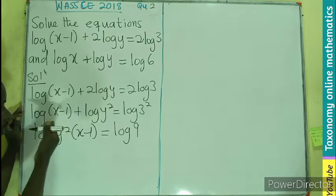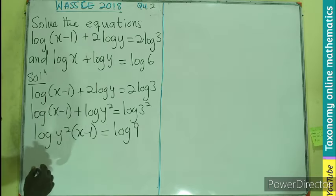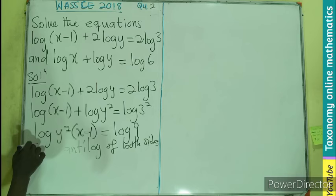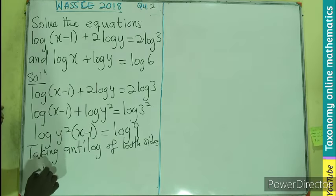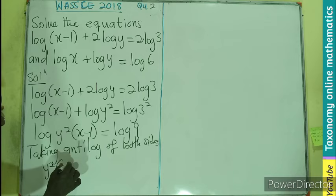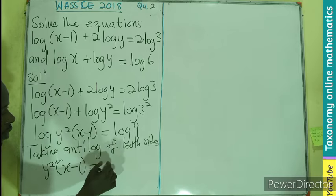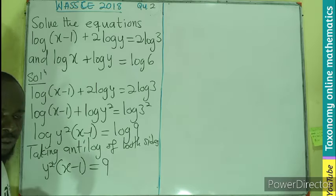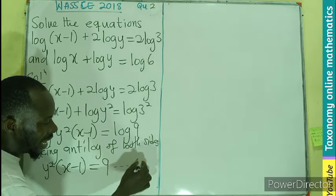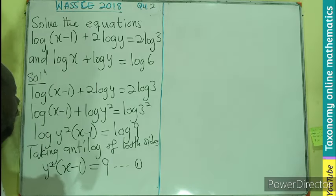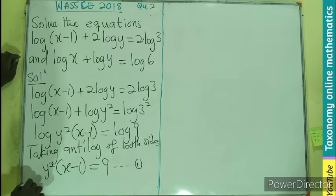What do we do? A logarithm to base 10, base 10 at both sides. So we take anti-log. So we're taking anti-log of both sides, cancel the logarithm, give you only y²(x-1) = 9. And you can see that we have both the x in here, taking that as equation 1. So let's go to the second one.